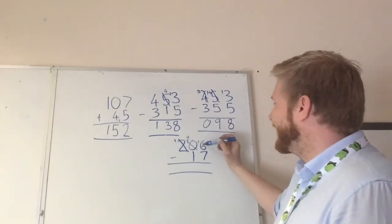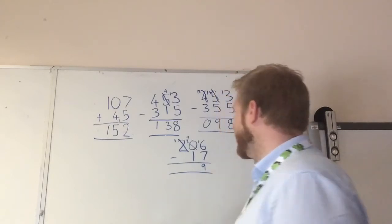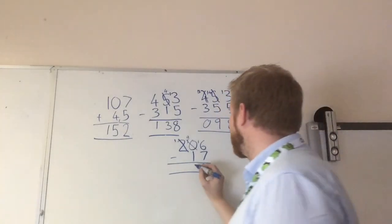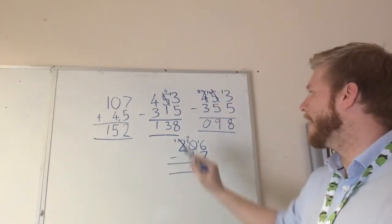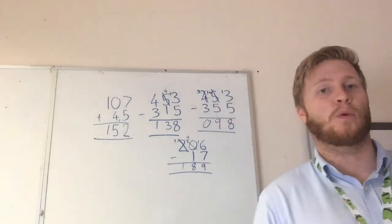Okay, so you've got 16 take away 7, which becomes 9. Now in this column, we have 9 take away 1, which is 8. Okay, and then lastly, we have 1 take away nothing, which is 1. And now our answer is 189.